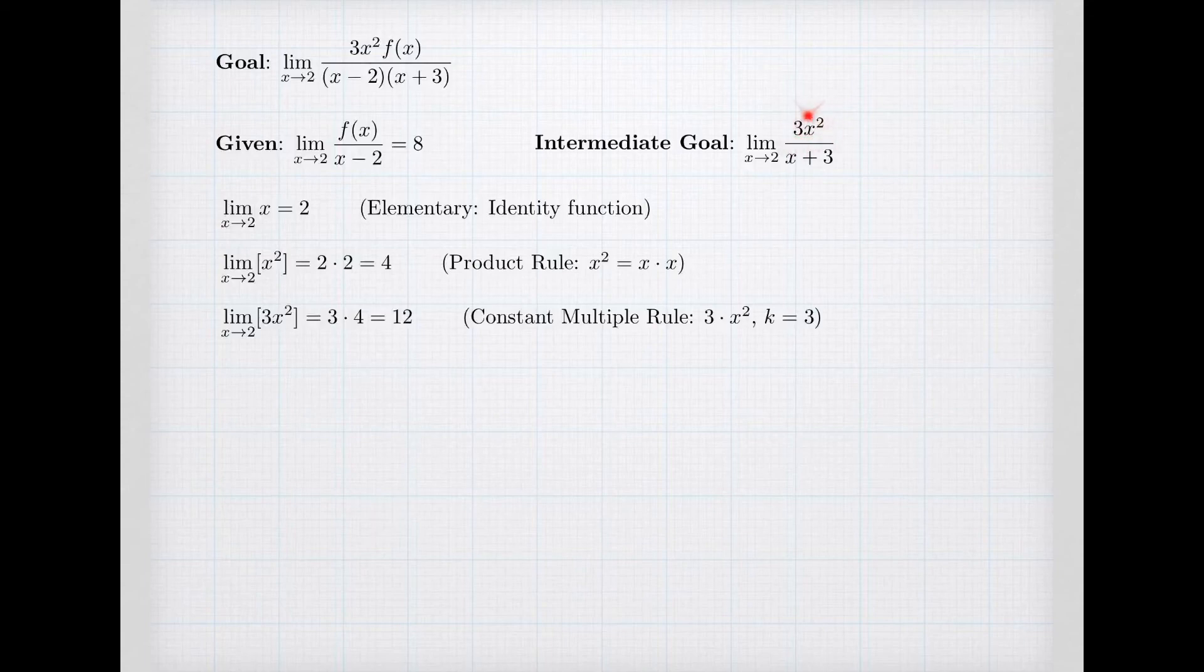Next, we keep building up that numerator 3x². That's a constant 3 times x². x² we just did the limit. And so the constant multiple rule says we get 3, the constant, times the limit of x², which is 4, for a net value of 12. So now we know the limit of the numerator.